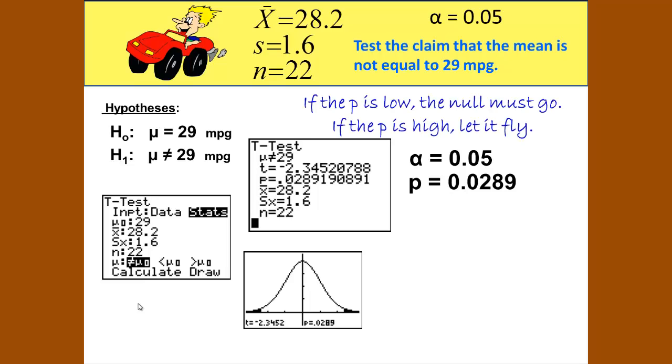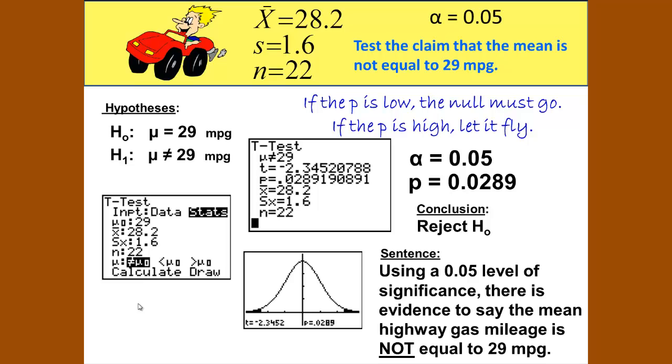If the p is low, the null must go. If the p is high, we let it fly. And in our case, our p is lower than our alpha, is less than our alpha. And since p is less than our alpha, we will reject the null. And so our sentence is: using a 0.05 level of significance, there is evidence to say that the mean highway gas mileage is not equal to 29 miles per gallon.